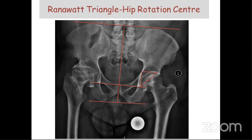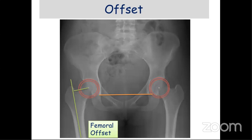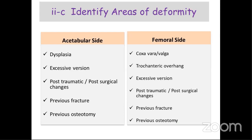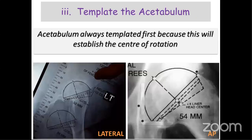Identify areas of deformity on the acetabular side — such as dysplasia, excessive anteversion, previous fracture, or osteotomy — and on the femoral side, such as coxa vara, coxa valga, excessive anteversion, previous fracture, or osteotomy. The manufacturer provides templates: place the acetabular template with its center on the acetabular center. The femoral component should not cross the Kohler's line (ileo-ischial line) and should be placed on the superolateral part of the acetabulum.